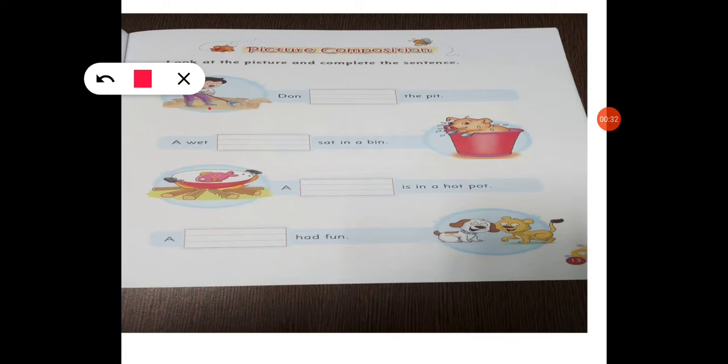There is a man. Man kya kar raha hai? Dig kar raha hai. Or kya dig kar raha hai? Ho pit ko dig kar raha hai. So, the man name is Don. Don dig. Dig hota khod na. Dig the pit. Kyes ko dig kar raha hai? Pit ko dig kar raha hai. Dig the pit, yani gaddha khod raha hai na mitti me. So, Don dig the pit.